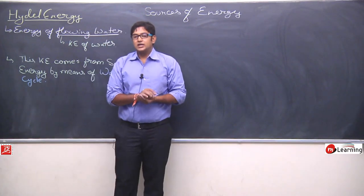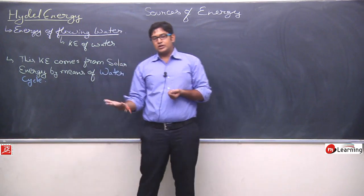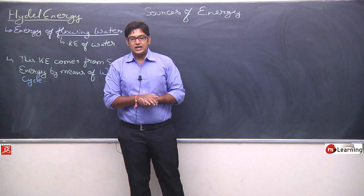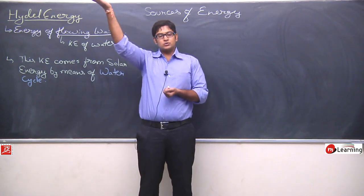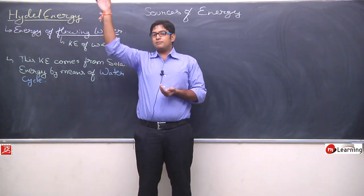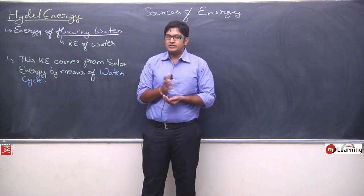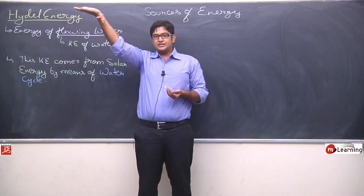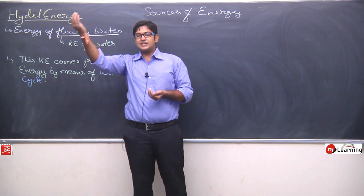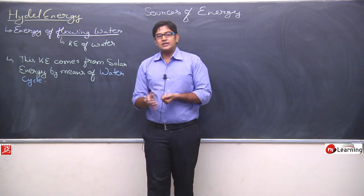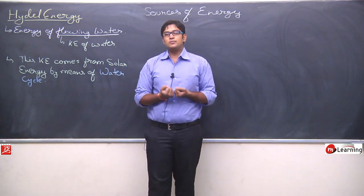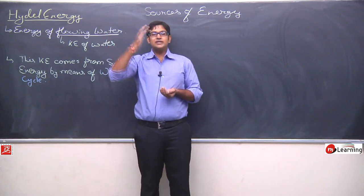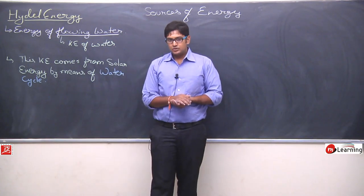अब नीचे की तरफ flow क्यों हो रही है? Because जब cloud बना था, उन water vapors को solar energy मिली, solar energy की वज़ा से water vapor उपर की तरफ उठी और उनके पास potential energy आ गई। जैसे अगर किसी body को नीचे से उपर लेके जाओ तो उसमें potential energy आ जाएगी, और जब उसे छोड़ दो तो वो नीचे गिरेगी और potential energy, kinetic energy में convert हो जाएगी।